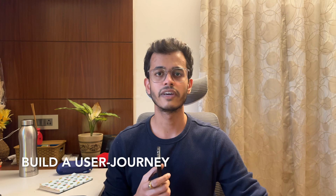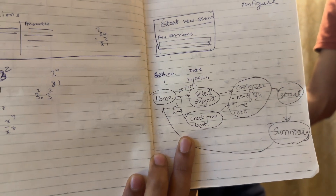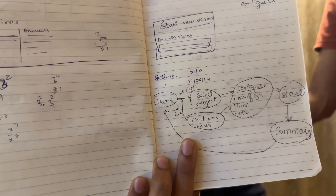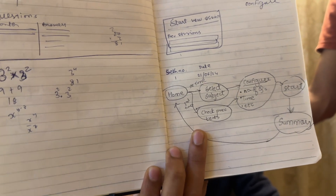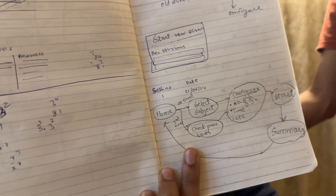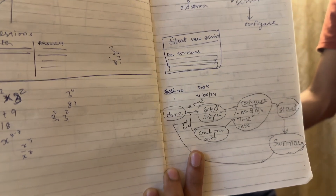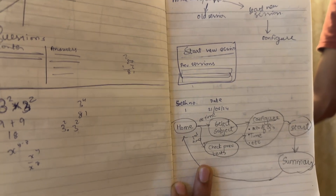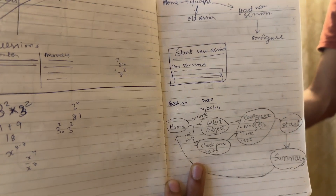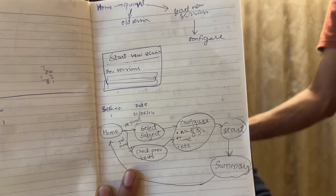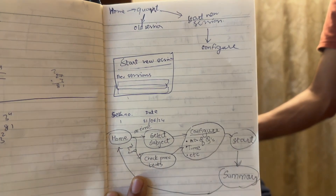Once we had gotten an understanding of that, we built a user journey — a very plain, dumbed-down user journey of how a person would go about it. This was the rough user flow: the user comes on the home screen, selects the subject, configures the test, and goes ahead and starts the test. You don't need to make any fancy flows as long as everyone in your team understands what you're building — that's enough to get started.